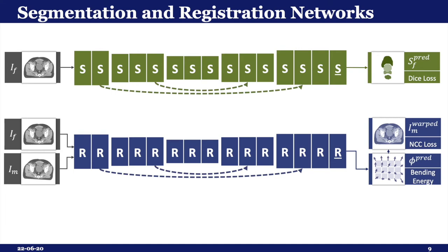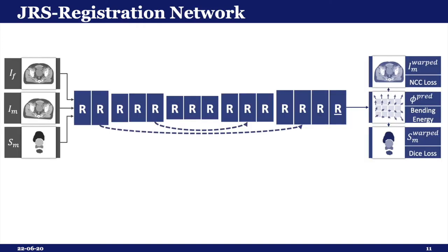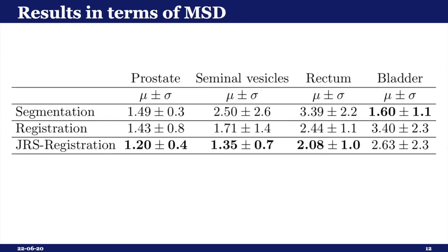For all networks, we use the same U-Net-like architecture. The segmentation network predicts a 3D probability map with 5 classes and is trained using the DICE loss. The registration network is trained using the NCC loss, as well as the bending energy loss as a regularizer for the DVF. Results in terms of mean surface distance show that the registration network performs best for most organs, while the segmentation network is best at predicting the bladder, since this organ deforms a lot between visits — a weakness for registration methods. A registration network trained with an additional DICE loss between the warped moving segmentation and the ground truth fixed segmentation improved results, although there is still room for improvement on the bladder.